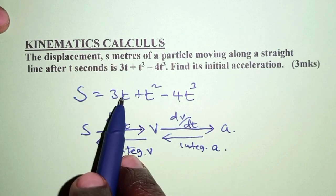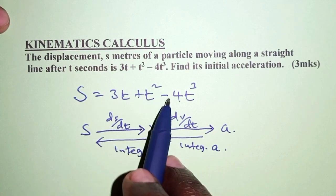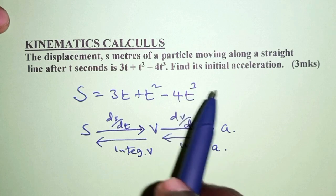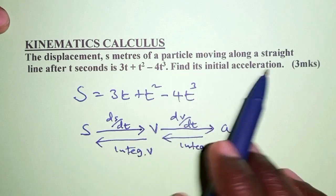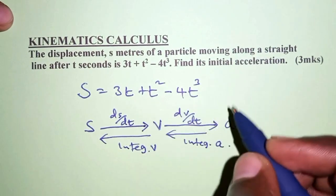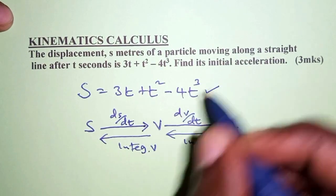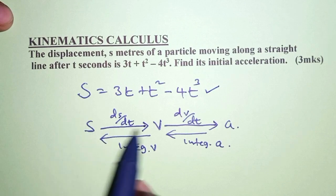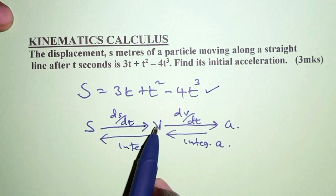s = 3t + t² - 4t³, and we are required to determine the initial acceleration. So for us to get acceleration, first of all we'll differentiate s to get v, and then differentiate v again to get acceleration.